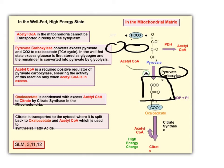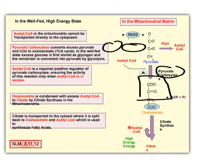That excess acetyl-CoA will then combine with the oxaloacetate to form citrate. As the high amounts of acetyl-CoA are used up and transported out of the mitochondria, eventually you stop getting this positive feedback, and pyruvate dehydrogenase is reactivated to create more acetyl-CoA. This ensures you're never using up all of the TCA cycle intermediates.